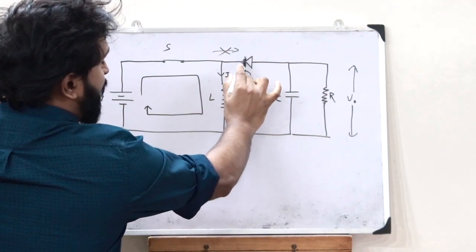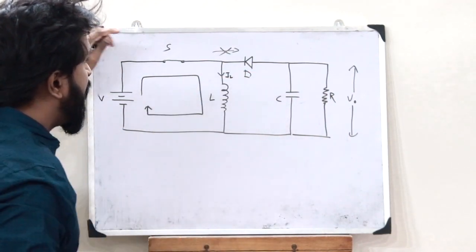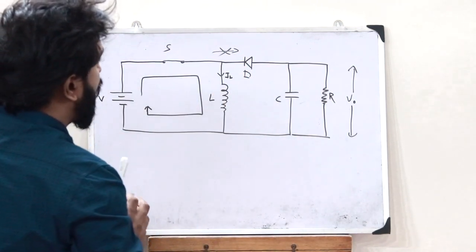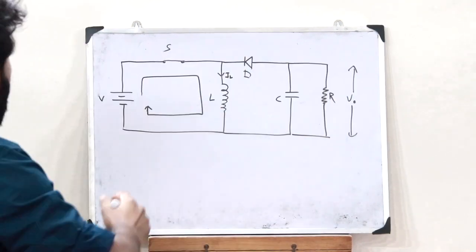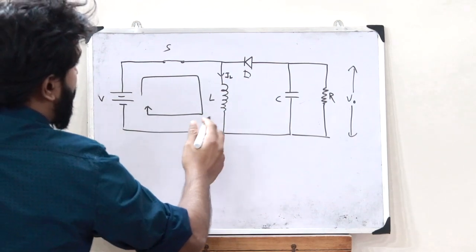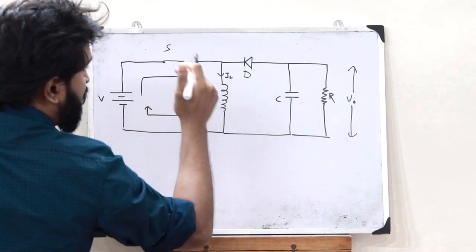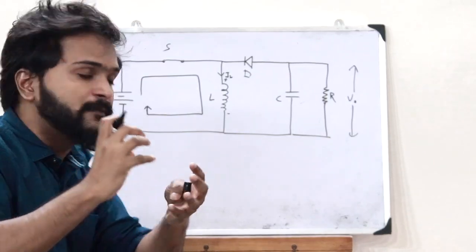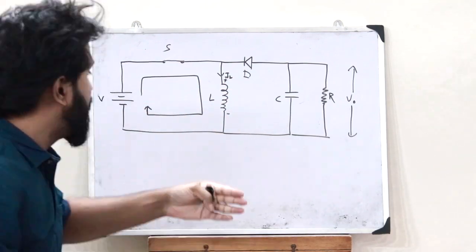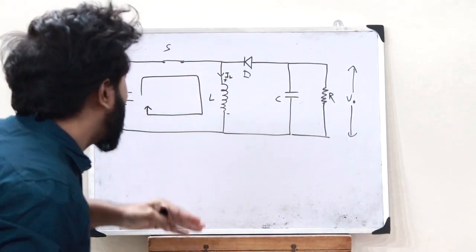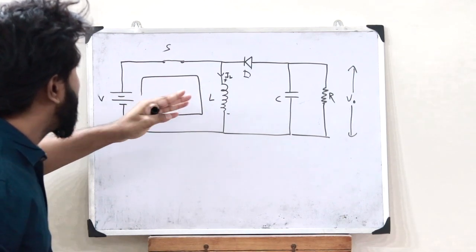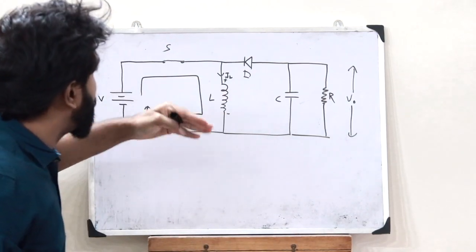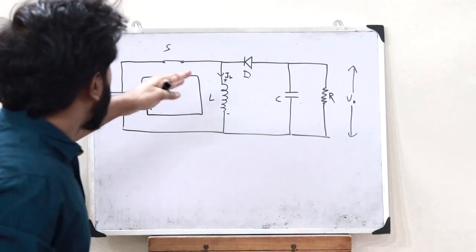When current flows in this loop, a polarity is developed across the inductor — plus on one side and minus on the other. This is because energy starts building up inside the magnetic field associated with the inductor. As the energy increases, a particular voltage develops across the inductor. That is what happens when the switch is on.